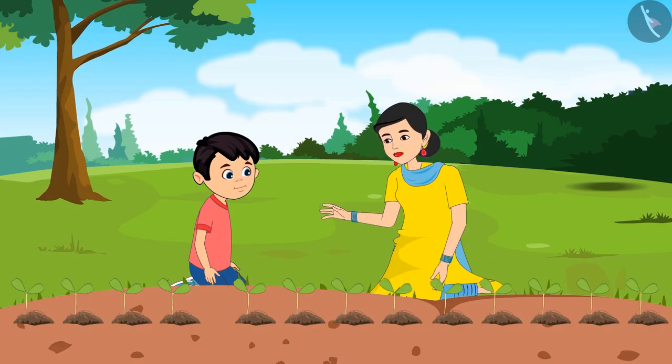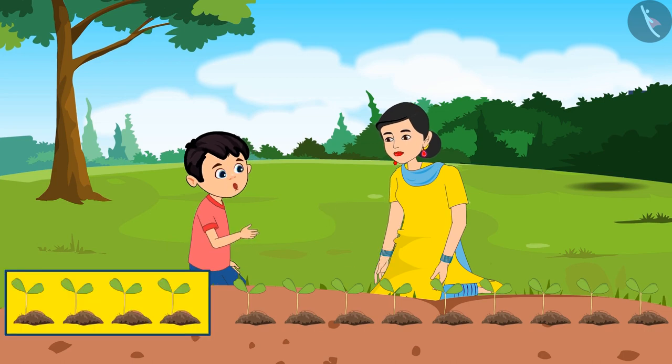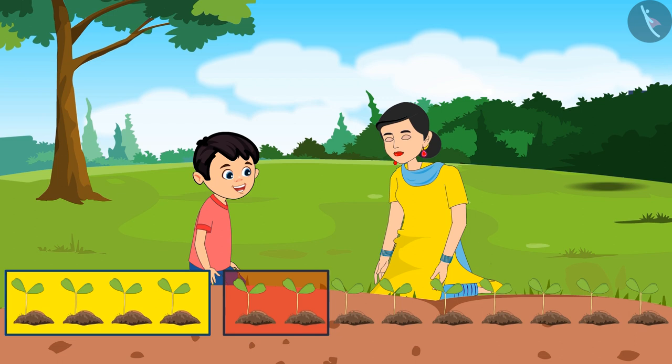Chotu, can you count and tell me how many saplings we have planted? We have planted four, four, five, six, seven, eight, nine, ten, eleven, twelve.